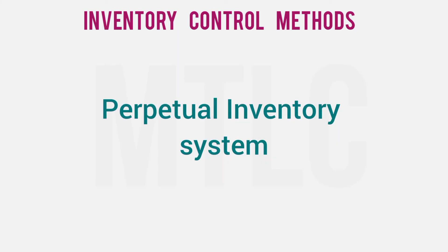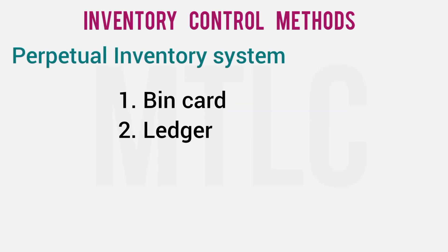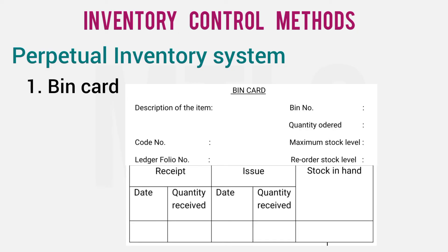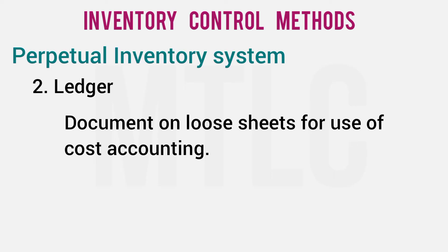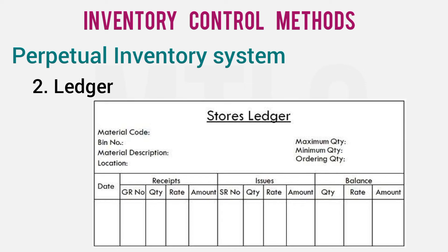There are two record-keeping tools: bin card and ledger. A bin card is a document maintained for each item — on the date of issue, it is updated on the card. This is the bin card method. The ledger method maintains a detailed ledger with columns for Receipt, Issue, Balance, and Stock Verified, and is used to maintain minimum or maximum stock levels.